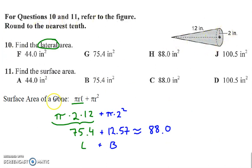Here we're looking at the cone. The surface area of a cone is its lateral area pi r times the slant height plus the base pi r squared. So slant height is 12 times the radius 2 and times pi 75.4 times the base gives us approximately 88.